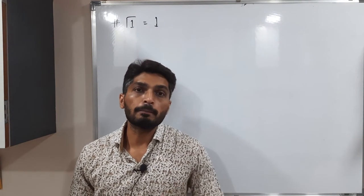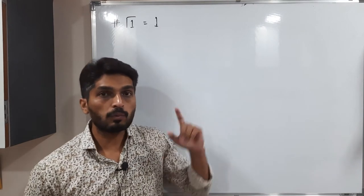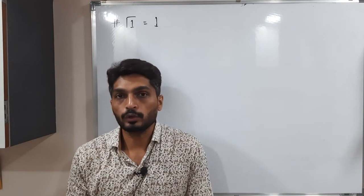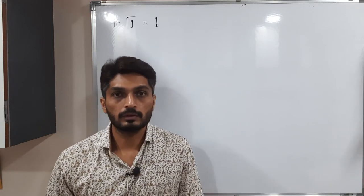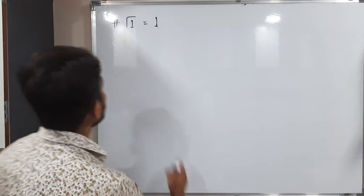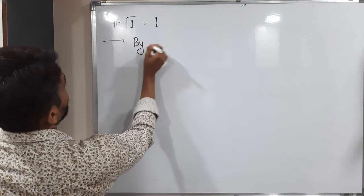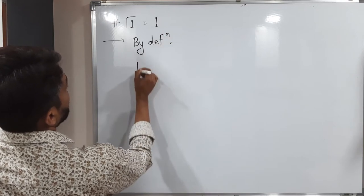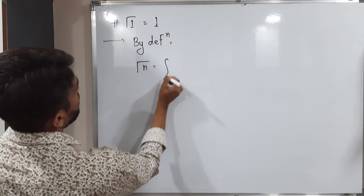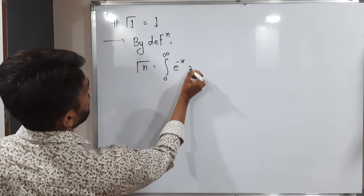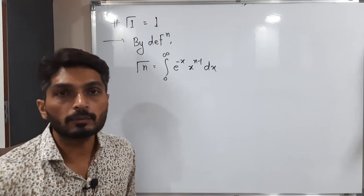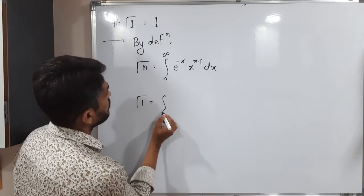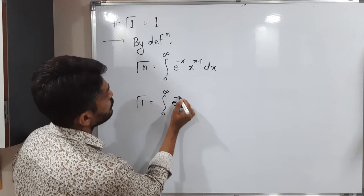Let us discuss a very important property of the gamma function: Gamma(1) is equal to 1. We will prove this by simply following the definition of the gamma function. By definition, gamma(n) is equal to integration from 0 to infinity of e raised to minus x, x raised to n minus 1, dx. We want Gamma(1), so let us put n equal to 1. We will have Gamma(1) equal to integration from 0 to infinity of e raised to minus x, x raised to 1 minus 1, dx.